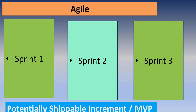After each sprint, a potentially shippable increment is released. The customer can use that increment. After each and every sprint, the customer gives feedback, which drives the next sprint's implementation. This ability to increase features and incorporate feedback after every sprint is a key advantage of Agile.